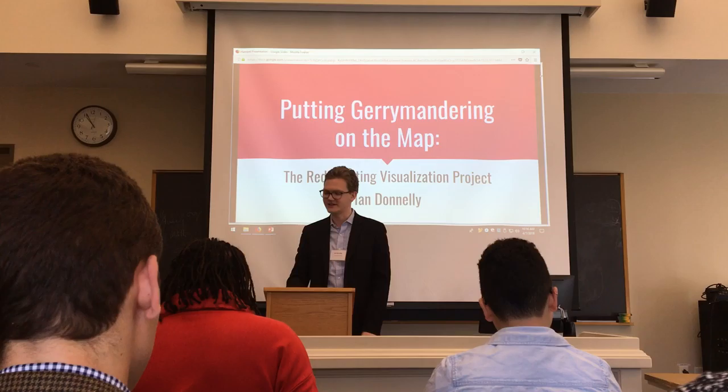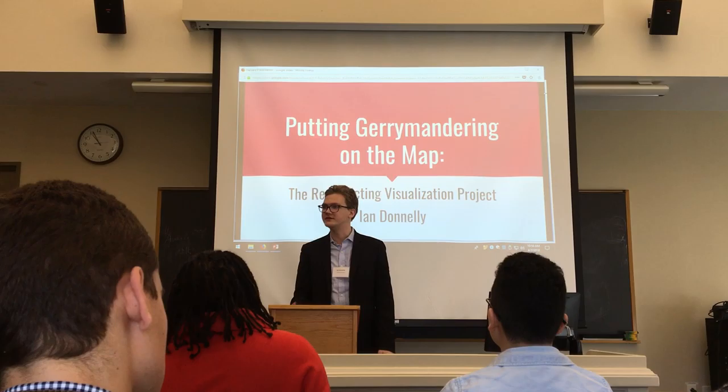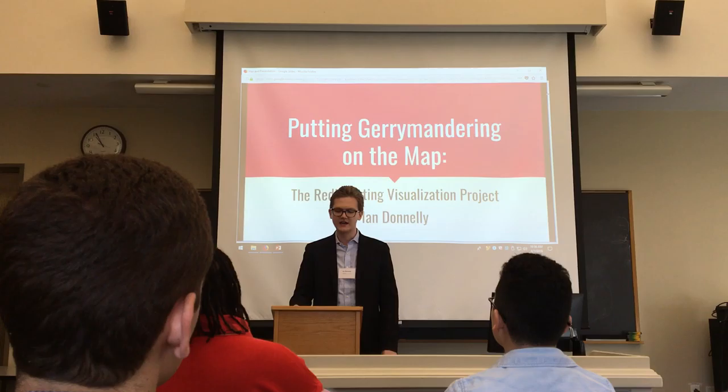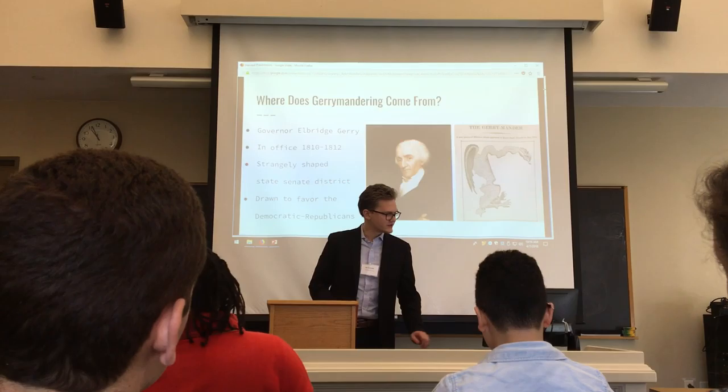Good morning everybody. My name is Ian Donnelly. I'm currently a senior at Northeastern University across the river in Boston. I major in history with minors in political science and law and public policy. My talk today is putting gerrymandering on the map, and it discusses some of the research I've been doing over the past few months developing what I've been calling the Redistricting Visualization Project — a new, unique kind of way of viewing how and why congressional districts have changed over time.